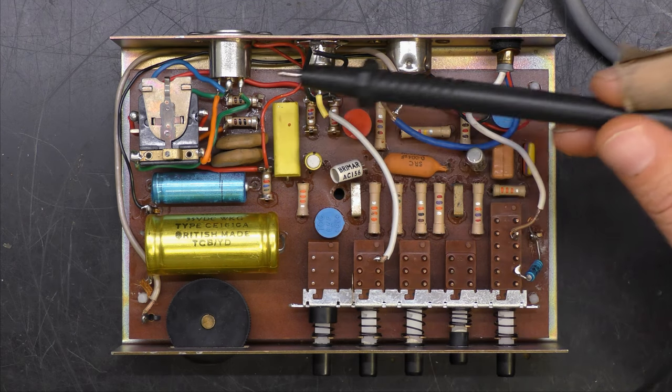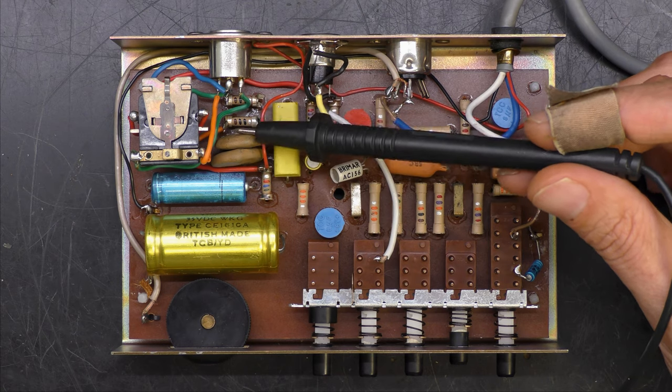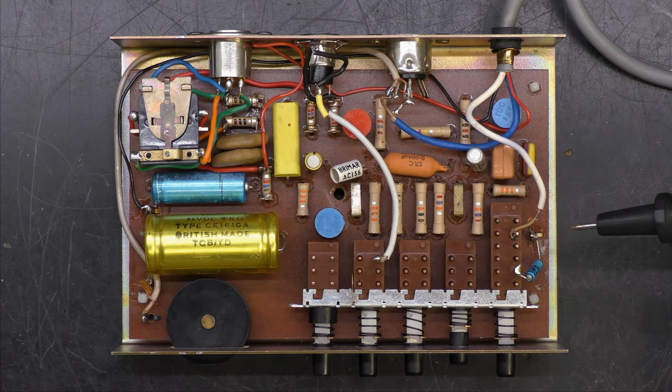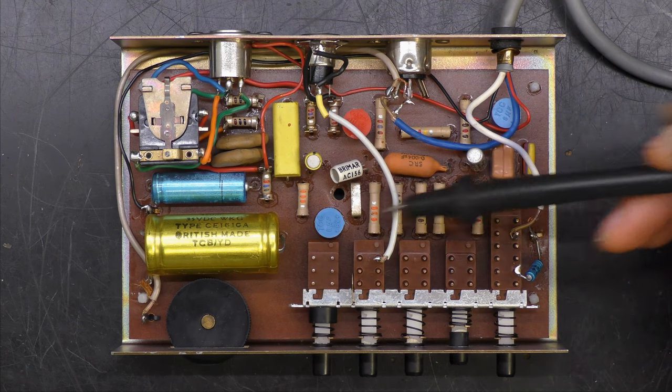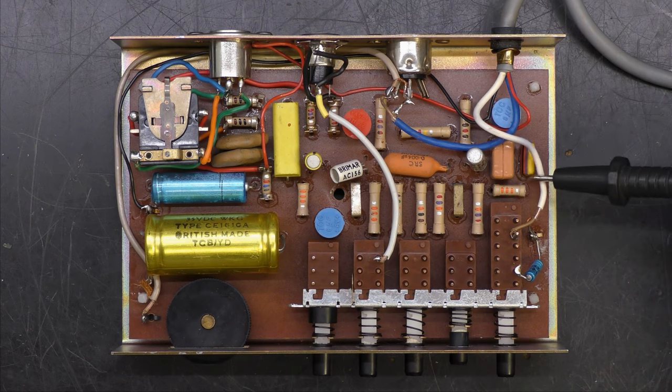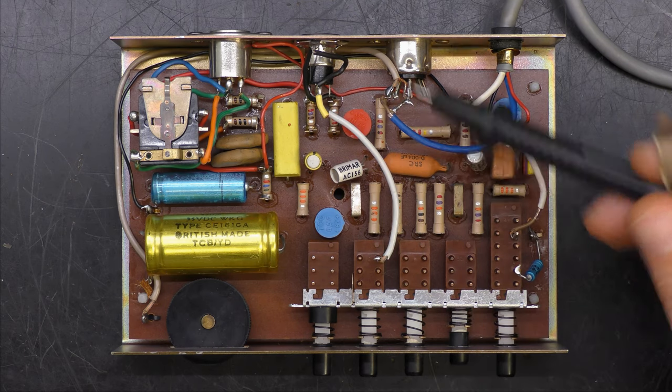We've got a relay here with normally closed and normally open contacts, so these must be suppression components and then we've got three germanium transistors and a number of electrolytics and resistors. So I'm just trying to figure out at the moment the best way to tackle this one. I see there's a white screen cable here, a blue screen cable here and it looks like the earth is about to fall off.